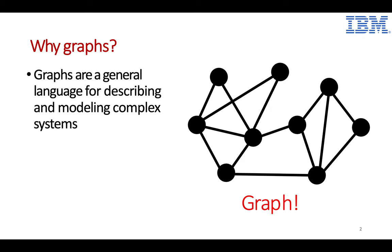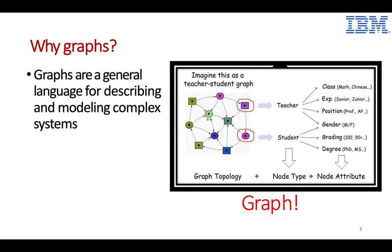So why do we care about graphs? Graph essentially is a generic language that can describe and model complex systems. Graph is a very simple structure: you have some nodes to represent some objects, and you have some edges to describe the relationship between two nodes. For example, in a teacher's knowledge graph from an AI-plus-education domain, a node related to a teacher can have its own attributes — for example, what classes the teacher is teaching and their relative ranking. All this information is formulated as attributes for the node.